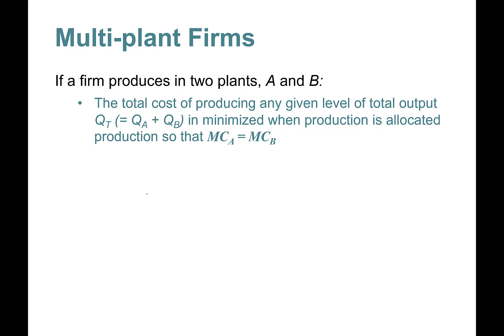If a firm produces in two plants, A and B, the total cost of producing any given level of output Q_T is minimized when production is allocated such that marginal cost in different plants are equal to each other.